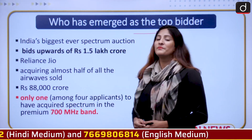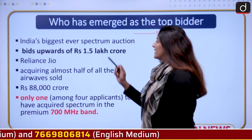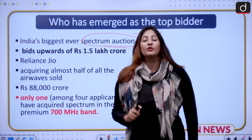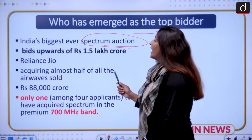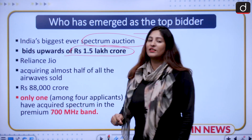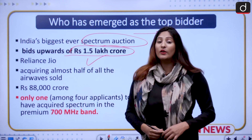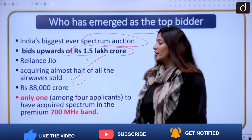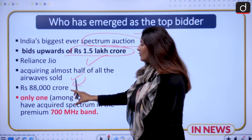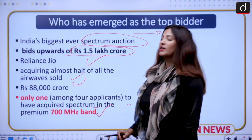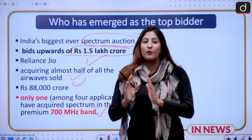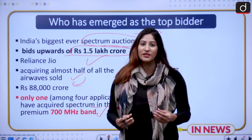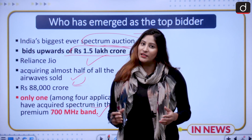This was India's biggest ever spectrum auction. Earlier it was estimated to take only three days, but it took seven days and concluded on Monday, with bids upward of Rs. 1.5 lakh crore registered. The highest bidder was Reliance Jio, which acquired almost half of the airwaves, allocating Rs. 88,000 crore for it. Reliance Jio was the only company to acquire spectrum in the 700 MHz band, targeting consumer-led smartphone services.